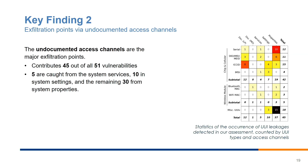Our next key finding concerns exfiltration points via undocumented access channels. We found that the three undocumented channels — system services, system properties, and system settings — are the major exfiltration points, contributing 45 out of 51 vulnerabilities. Five were caught from system services, 10 from system settings, and the remaining 30, which occupy two-thirds of all found vulnerabilities, came from system properties.